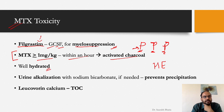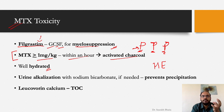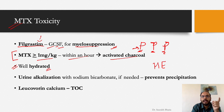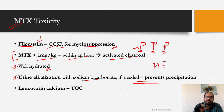Management of methotrexate toxicity: keep the patient well hydrated with IV and oral fluids to promote renal excretion. Urine alkalinization with sodium bicarbonate prevents methotrexate precipitation in renal tubules. The treatment of choice is leucovorin calcium (folinic acid), which bypasses the steps inhibited by methotrexate.